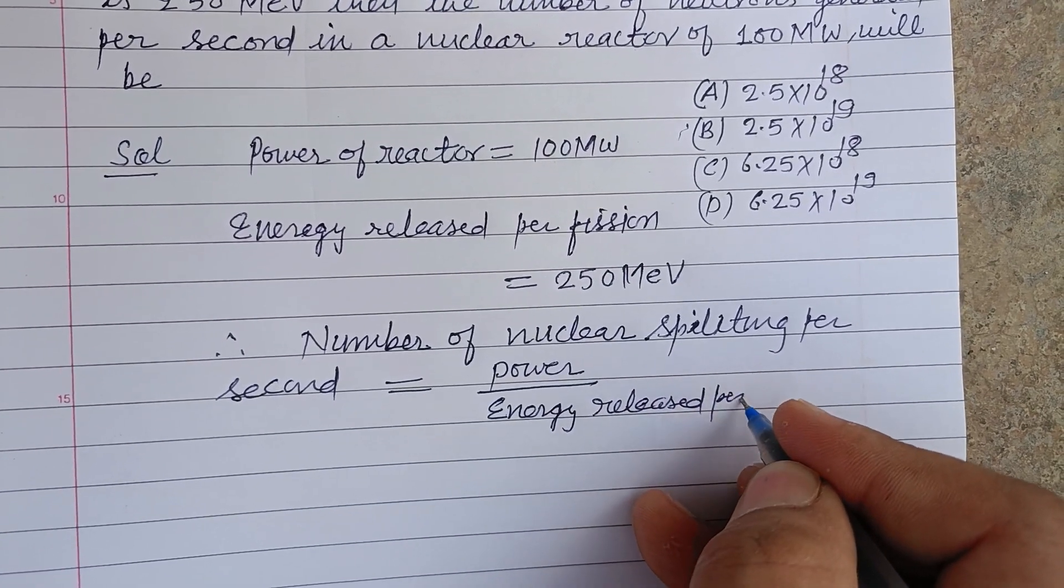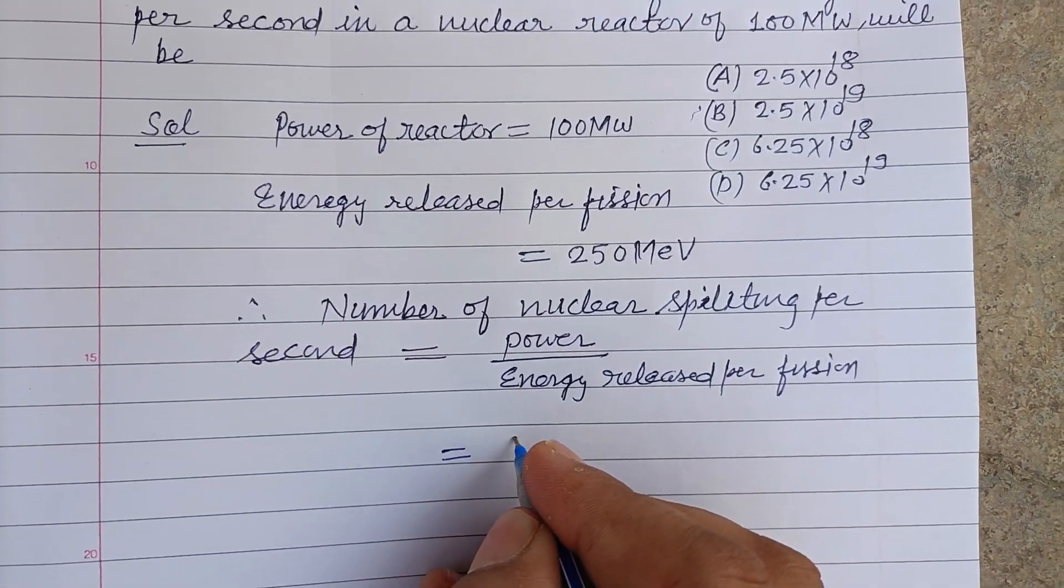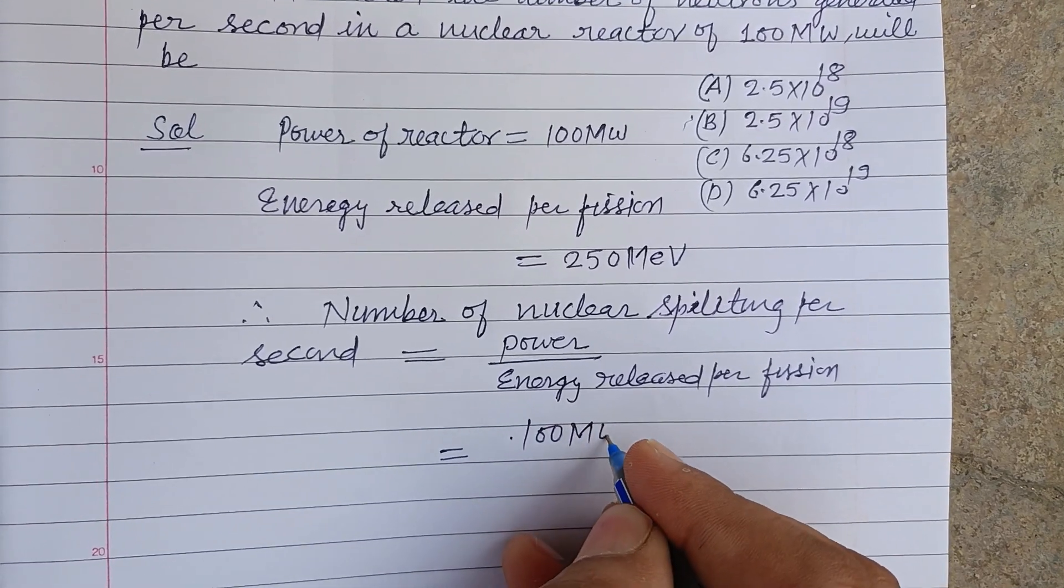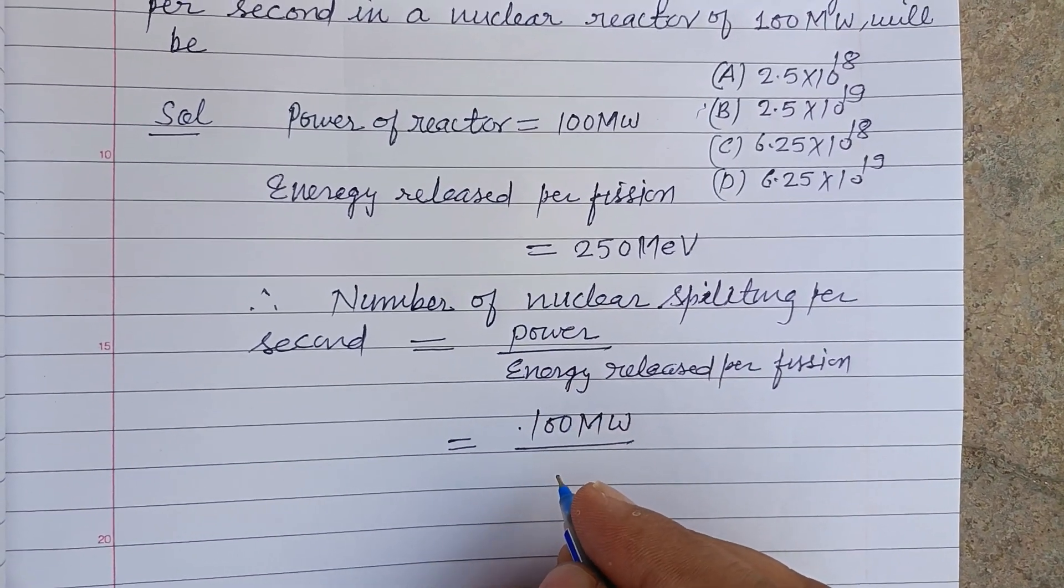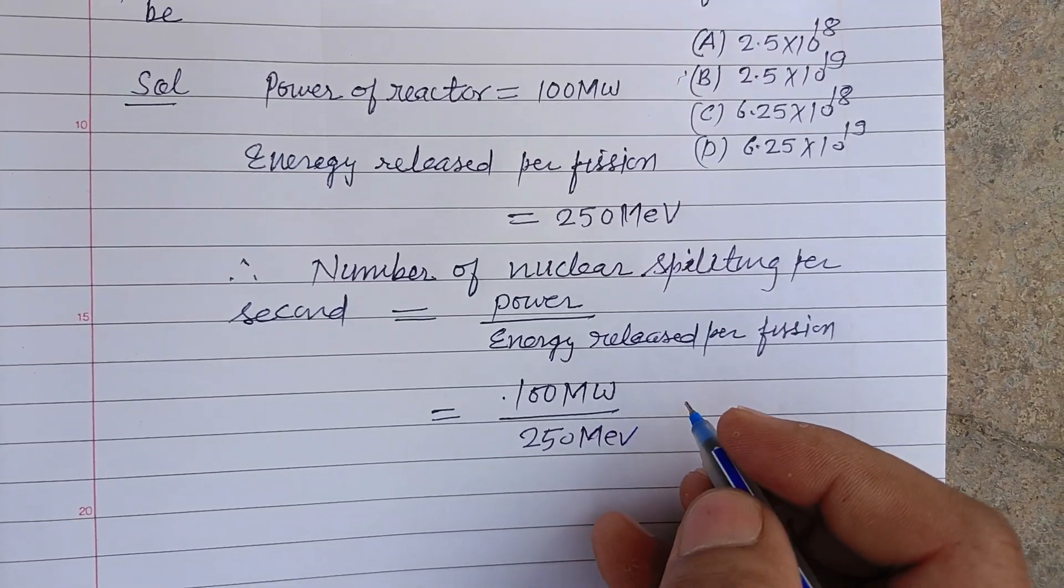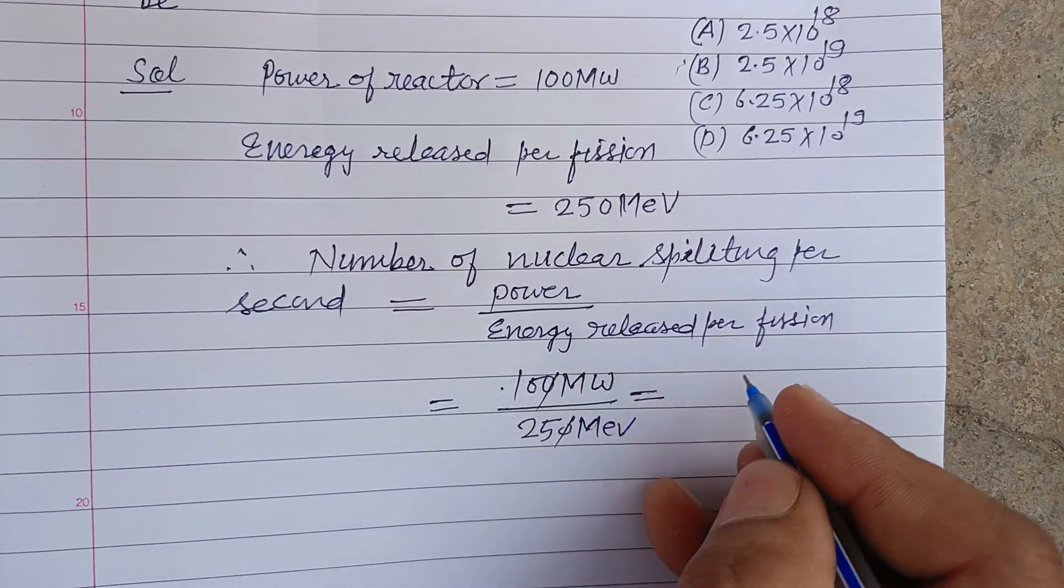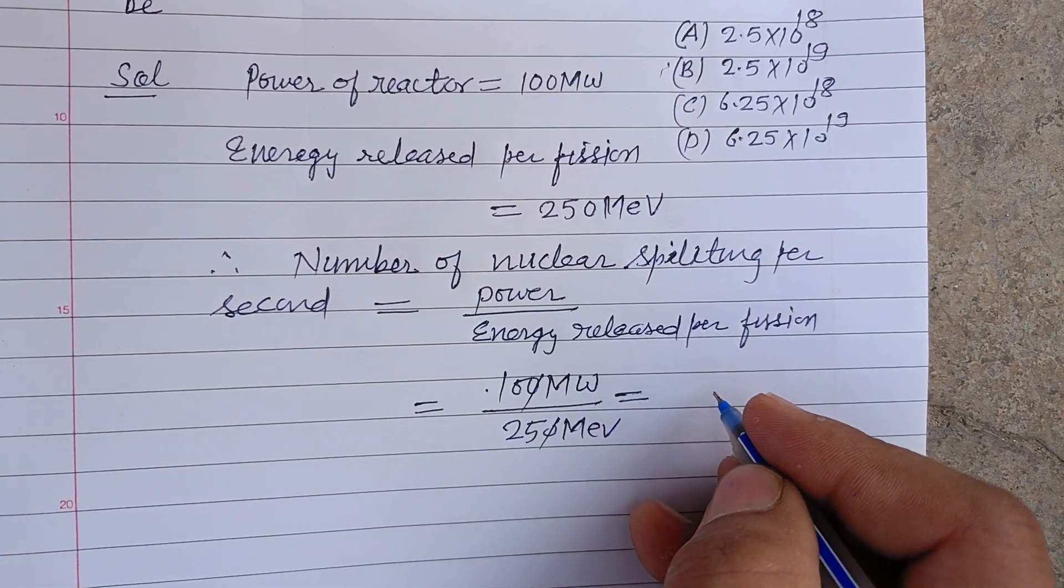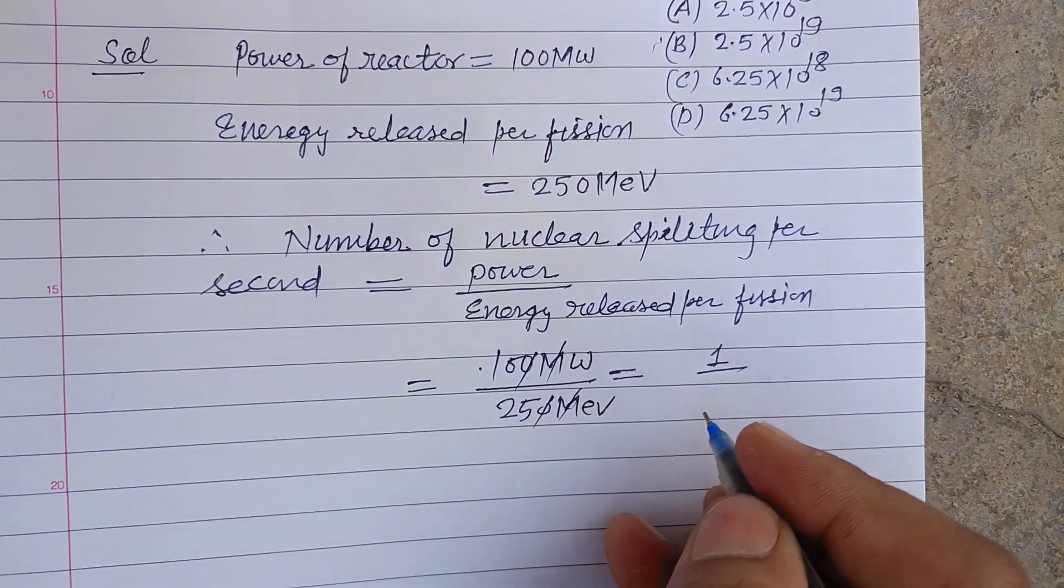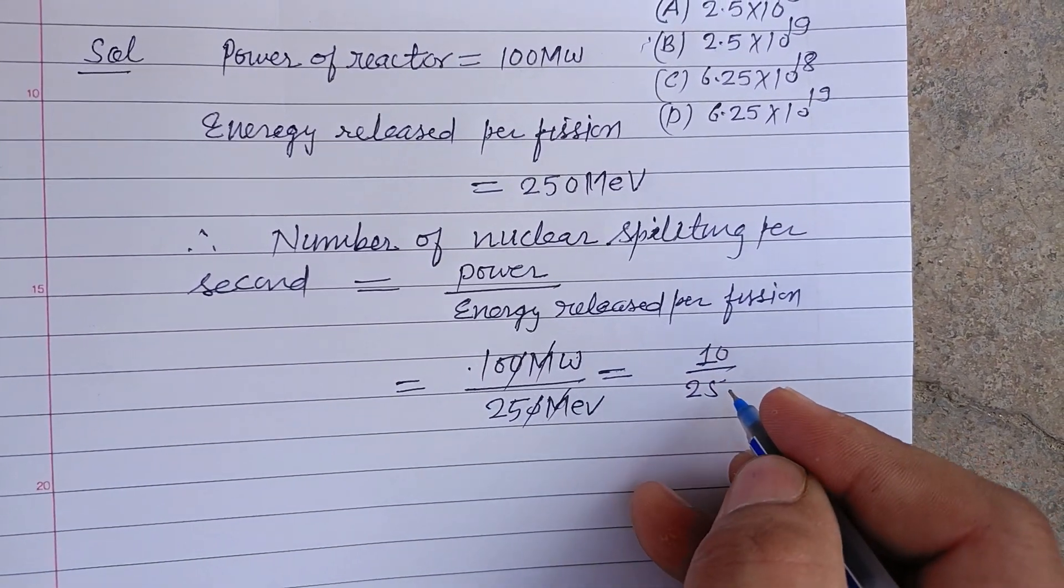per fission. So power is here 100 megawatt upon 250 million electron volts. So this will be, zeros cancel, we got one upon, billions also cancel, so this is 10 upon 2 times 25 electron volts. And this is one upon 2.5.